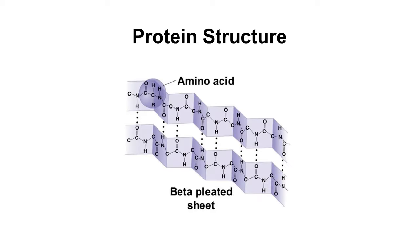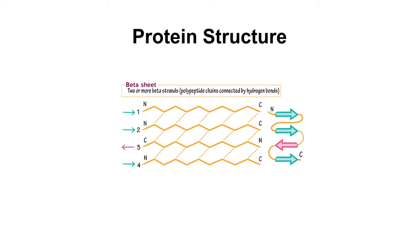In beta pleated sheet structure, all peptide chains are stretched out to nearly maximum extension and then laid side by side which are held together by intermolecular hydrogen bonds. The strands of a beta pleated sheet may be parallel, pointing in the same direction, meaning that their N and C termini match up, or anti-parallel, pointing in opposite directions, meaning that the N terminus of one strand is positioned next to the C terminus of the other.